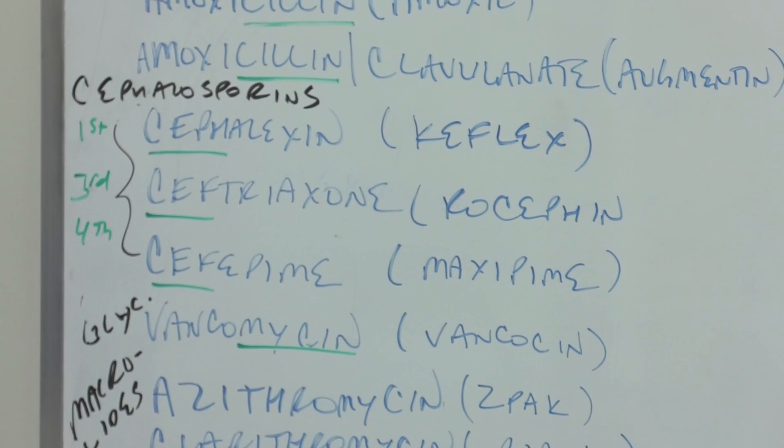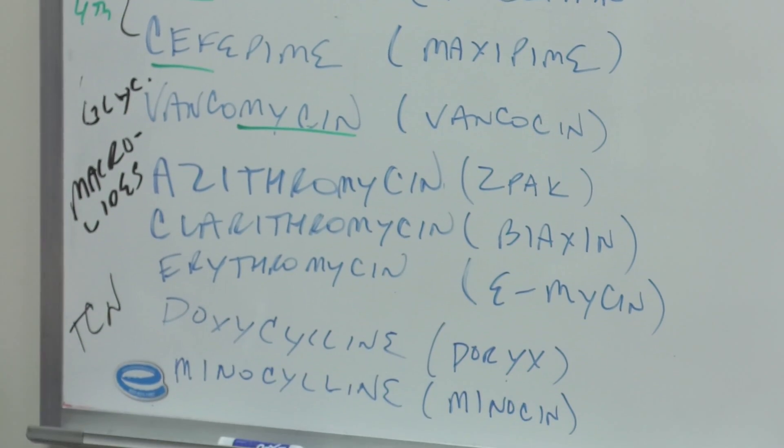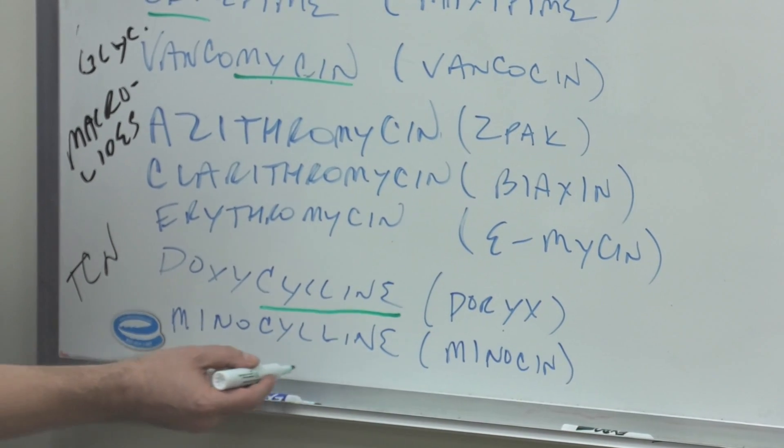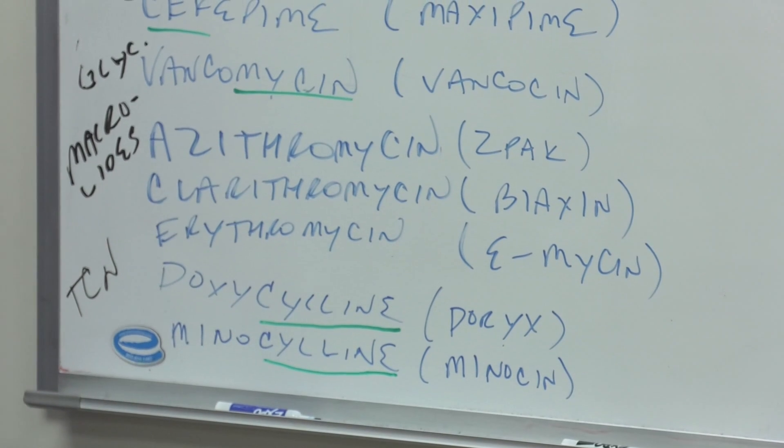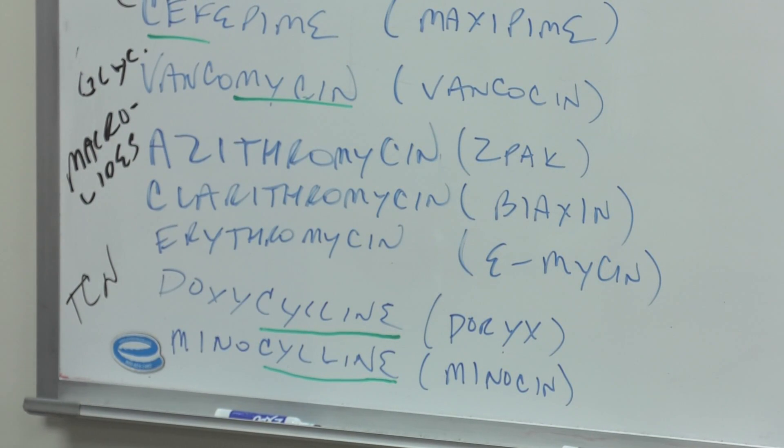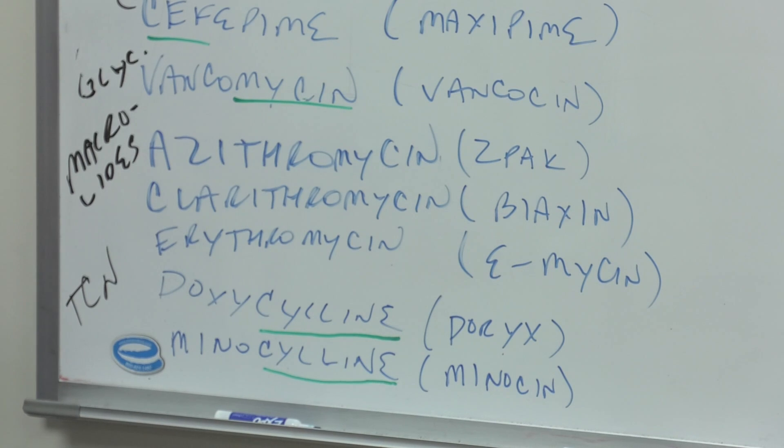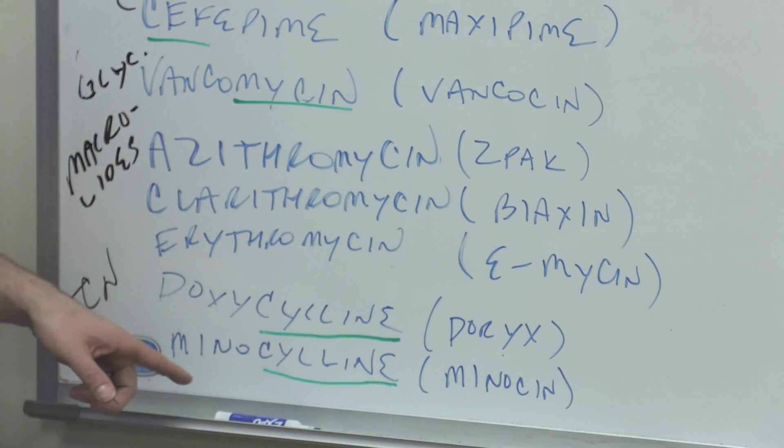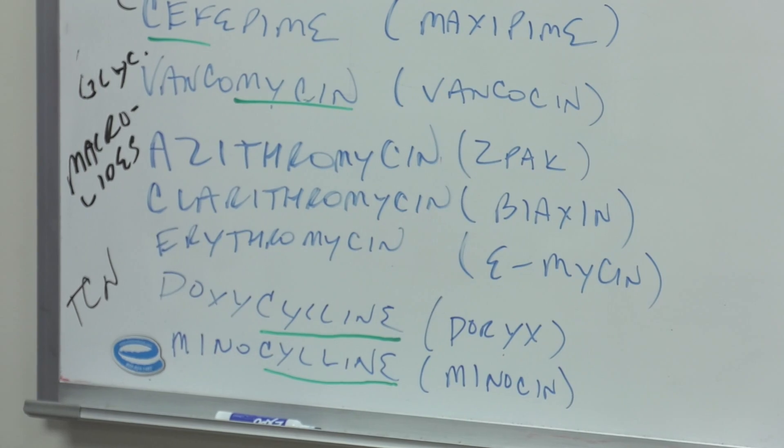This is where I mixed it up. The tetracyclines should be before the macrolides. You can see tetracyclines—doxycycline from C-Y-C-L-I-N-E and minocycline from C-Y-C-L-I-N-E. They're called tetracyclines because they have four rings. The game Tetris was actually tetra for four and tennis, so the person who invented it combined those two together. We're naming this class after the four rings in it. Doryx for doxycycline is the brand name, and minocycline's brand name is Minocin.